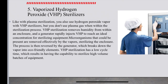Vaporized hydrogen peroxide sterilizers are similar to plasma sterilization in that they also use hydrogen peroxide vapor, but without the plasma gas within the sterilization process. Vaporized hydrogen peroxide sterilization removes humidity from within an enclosure, and a generator helps inject vaporized hydrogen peroxide to reach an ideal concentration for sterilizing equipment. Microorganisms present are removed effectively by the vapors, sterilizing the enclosure. The process is then reversed by a generator, which breaks down the vapor into eco-friendly elements. Vaporized hydrogen peroxide sterilization has a low cycle time, allowing the capability to sterilize high-volume batches of equipment.